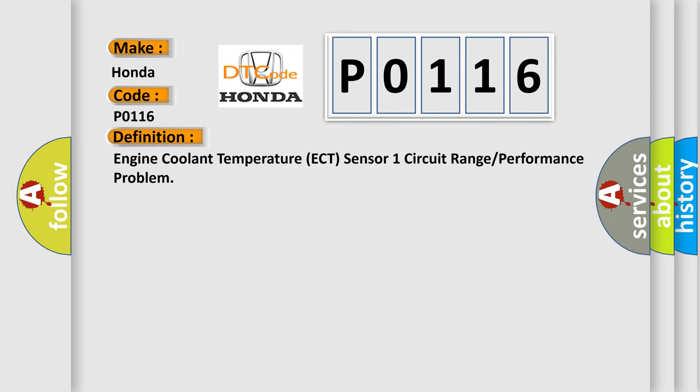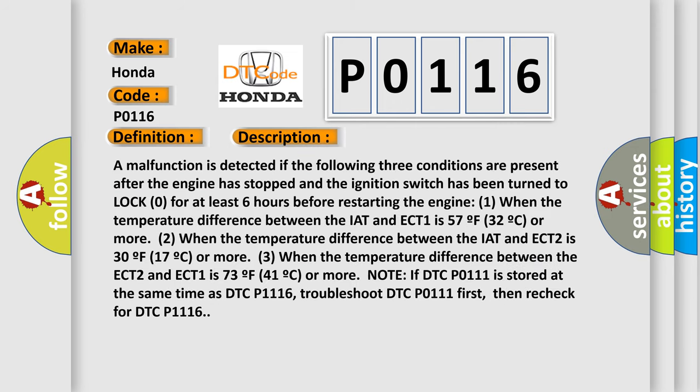The basic definition is: Engine Coolant Temperature (ECT) Sensor 1 circuit range or performance problem. A malfunction is detected if the following three conditions are present after the engine has stopped and the ignition switch has been turned to lock zero for at least six hours before restarting: (1) temperature difference between IAT and ECT 1 is 57°F / 32°C or more; (2) temperature difference between IAT and ECT 2 is 30°F / 17°C or more; (3) temperature difference between ECT 2 and ECT 1 is 73°F / 41°C or more. Note: if DTC P0111 is stored at the same time as DTC P1116, troubleshoot DTC P0111 first, then re-check for DTC P1116.